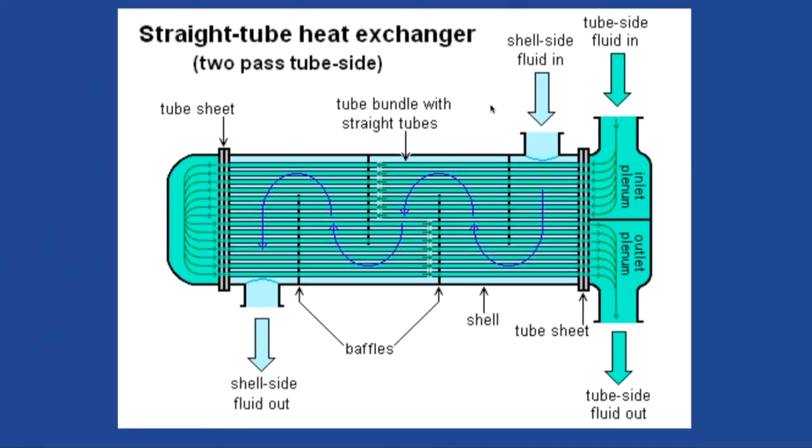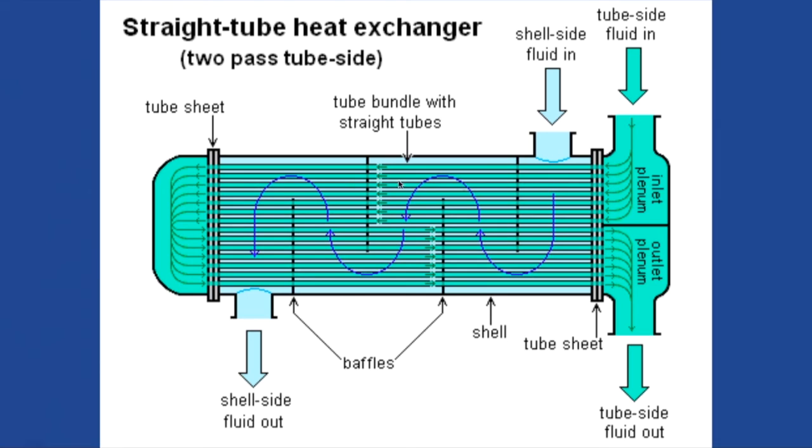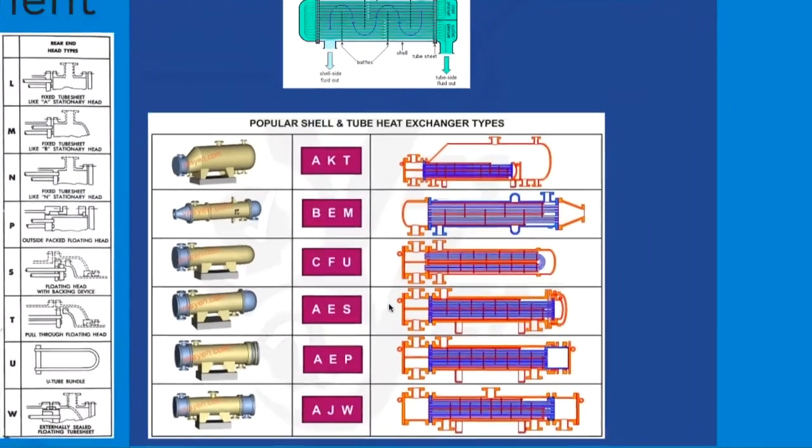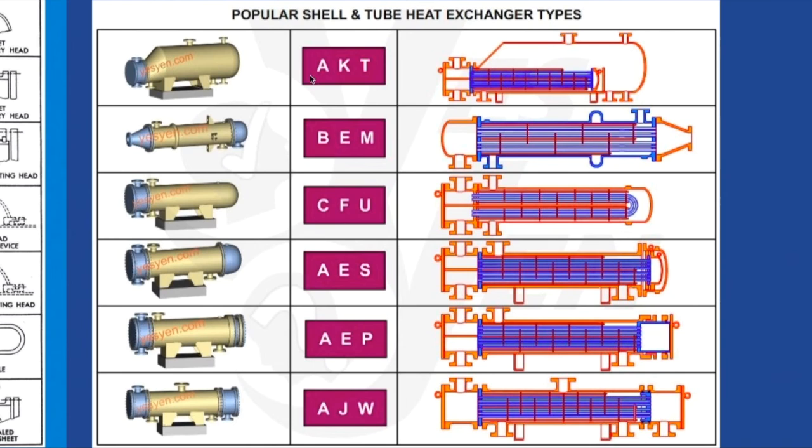Fluid goes in, transfers heat, and goes out. Looking at different configurations: this is A-K-T configuration—A for this piece, K for this section, and T because there's no extra component. This type is also used for evaporation, allowing gases to form here. There's also B-E-M and other configurations with different shells.